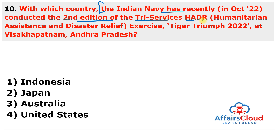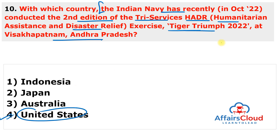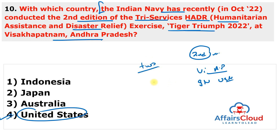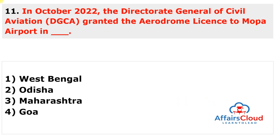With which country did the Indian Navy recently conduct the second edition of the tri-services Humanitarian Assistance and Disaster Relief exercise Tiger Triumph 2022 at Visakhapatnam, Andhra Pradesh? The answer is the United States of America. This is the second edition of the India-US tri-service HADR exercise Tiger Triumph, held in Visakhapatnam between the Indian Navy and US Navy, in line with growing strategic cooperation between the two countries. The first Tiger Triumph exercise was held in 2019 in Visakhapatnam, and it is the first tri-service exercise between India and the US.